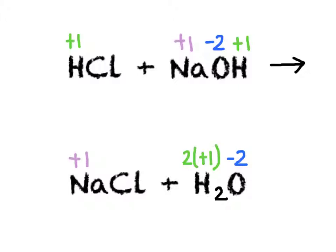For chlorine, in substances that only have two different types of atoms where you've got a halogen, they will always have a charge of minus 1. So in both of these substances, they've got a charge of minus 1. What we can see from this is that none of the oxidation numbers of any of these substances have changed, which is an indication that this is not a redox reaction. We could have seen before, if we hadn't used oxidation numbers, that this is actually an acid-base reaction — hydrochloric acid reacting with sodium hydroxide to form sodium chloride and water. But we could use oxidation numbers to confirm that it wasn't redox.